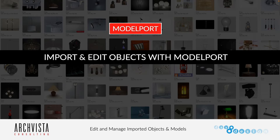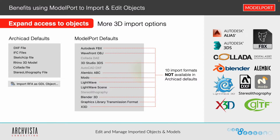Let's jump into how to import and edit objects with Model Port and give you an overview of that. Starting with the defaults in ArchiCAD versus Model Port for importing objects. On the left you see the ArchiCAD defaults — some basic defaults for importing different object model components such as DXF, IFC, SketchUp, Rhino, Collada, DAE, and RFA. On the right, you can see there are 10 additional import formats in Model Port not available within the ArchiCAD standards, in addition to all the other advantages we'll talk about today.